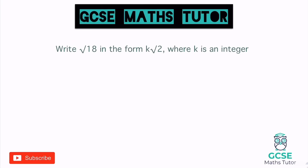When we are simplifying surds, this number underneath the square root we are going to try and make as small as possible. We can write surds in different ways, and to do that we need to have a good understanding of the square numbers. So it can always help just to write them down when you're starting off.